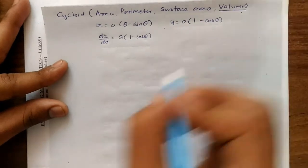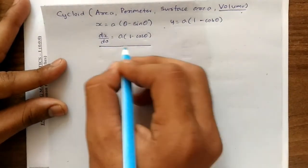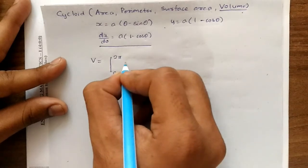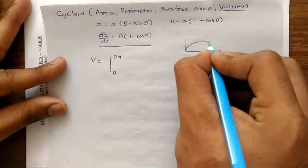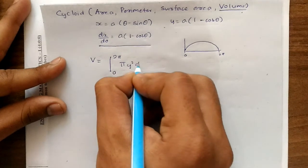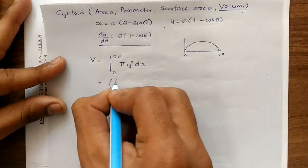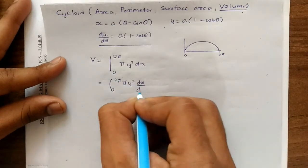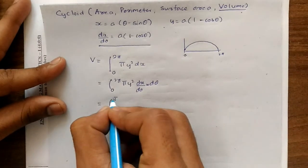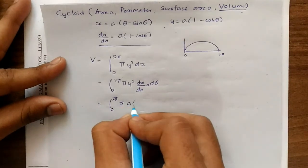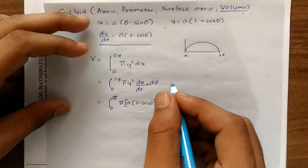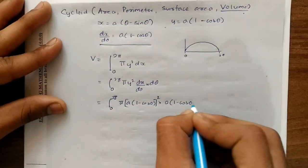The volume of a cycloid: dx/dθ is a(1 − cosθ). The volume of a cycloid is given by V equals the integral from 0 to 2π of πy² dx, because the figure ranges from 0 to 2π. This can be written as the integral from 0 to 2π of πy²(dx/dθ) dθ. Substituting, y = a(1 − cosθ), so y² gives that whole squared, and dx/dθ = a(1 − cosθ) dθ.